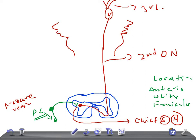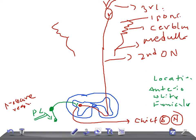The anterior spinothalamic tract follows the same pathway as the lateral spinothalamic tract. In the region of the medulla, the lateral spinothalamic tract and the anterior spinothalamic tract run together and form what is known as the spinal lemniscus.